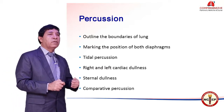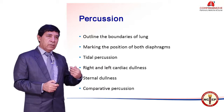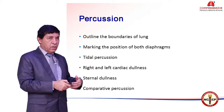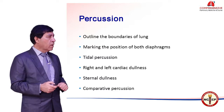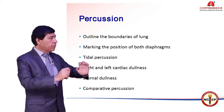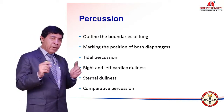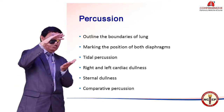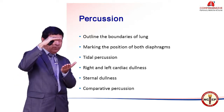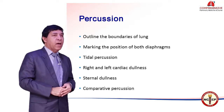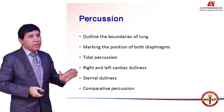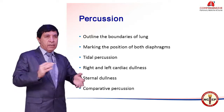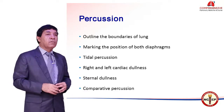Similarly, on the left side when you move from above downward, instead of dullness, you look for a tympanitic note of the stomach, and that is how you mark the diaphragm. By marking the position of the diaphragm, you have actually found out the lung span. That is the area of the lung span where you are going to do comparative percussion. Comparative percussion is actually percussing over the lung fields systematically.